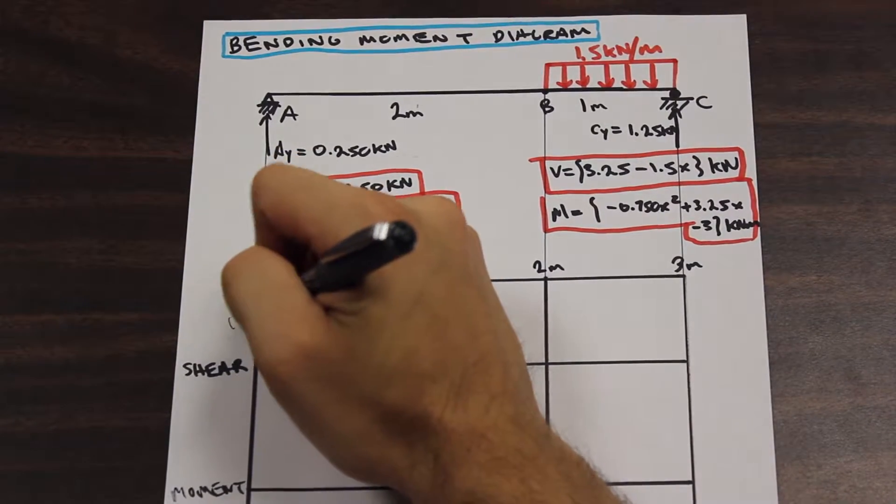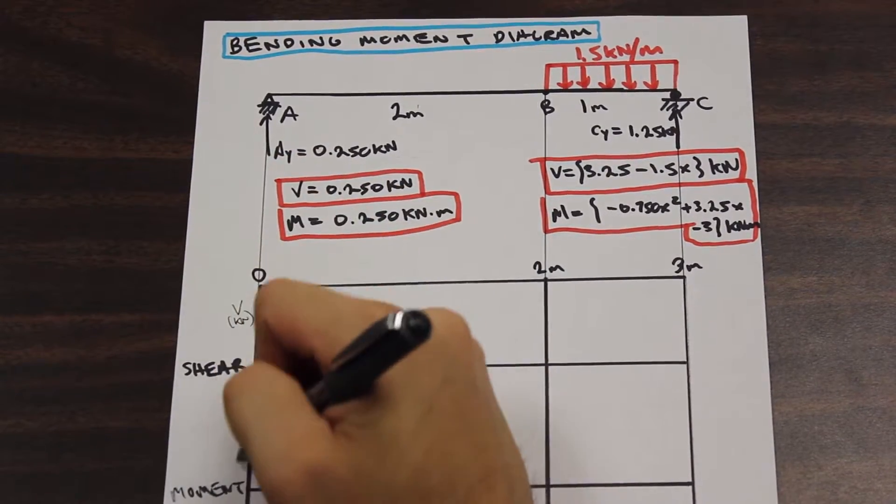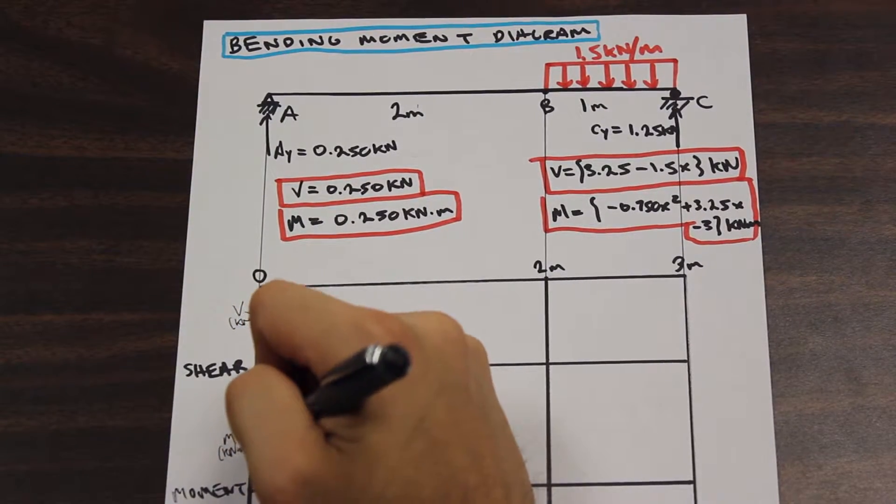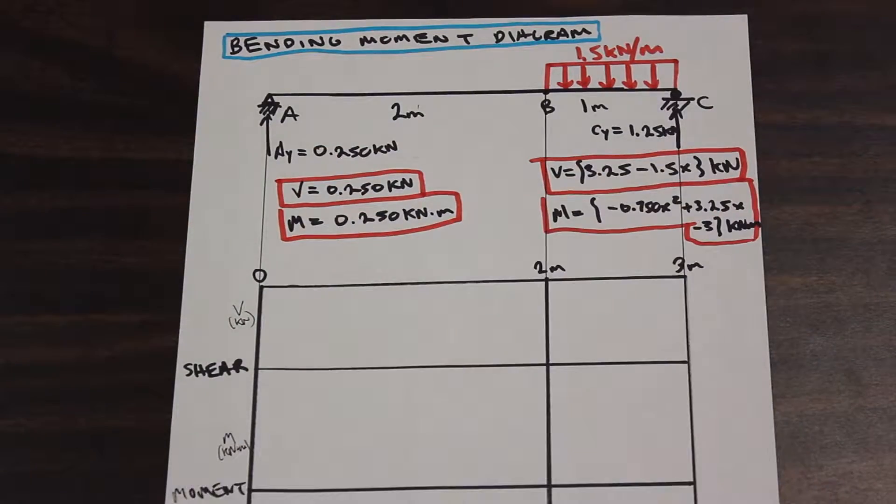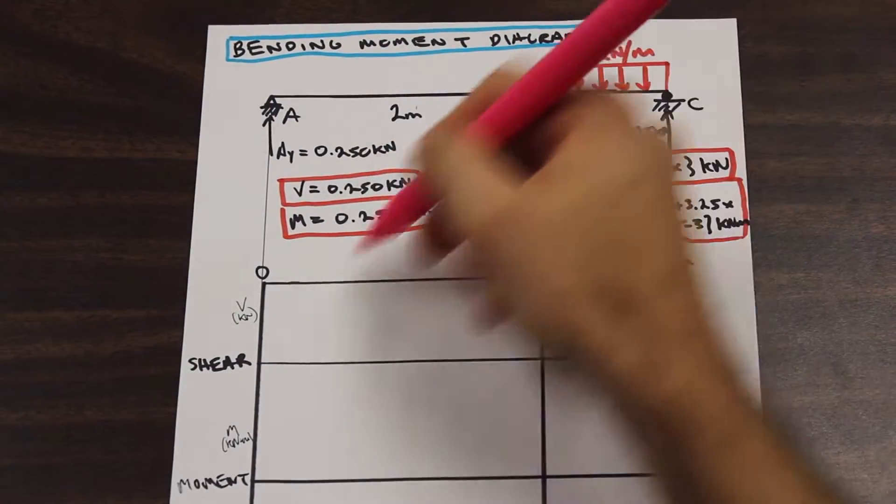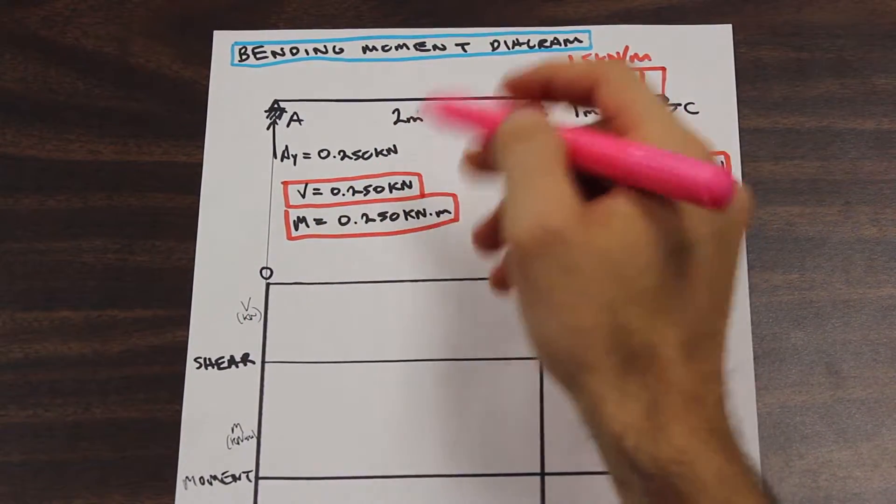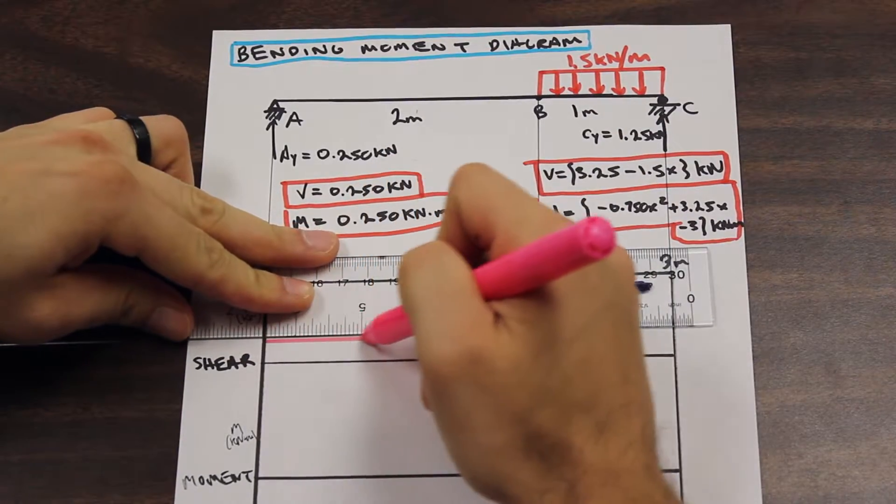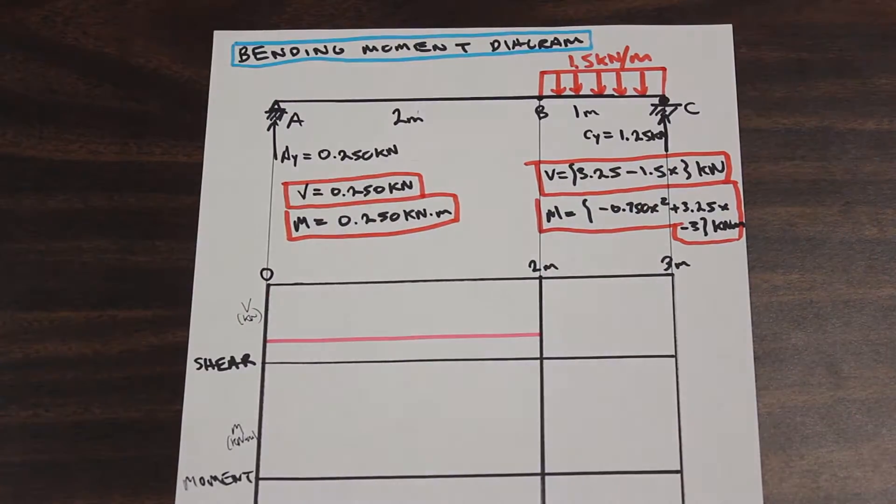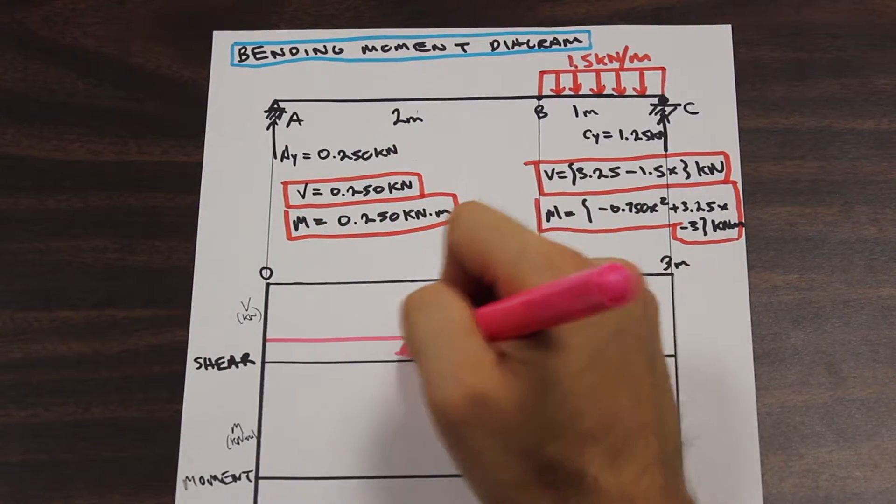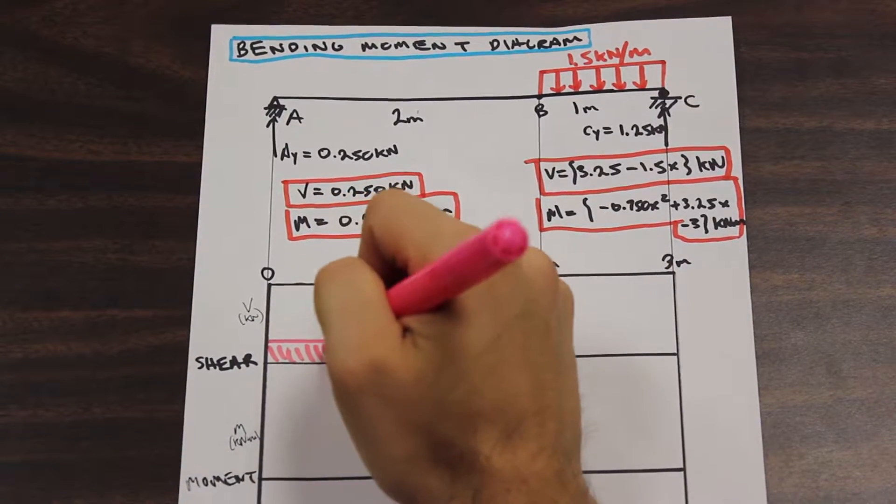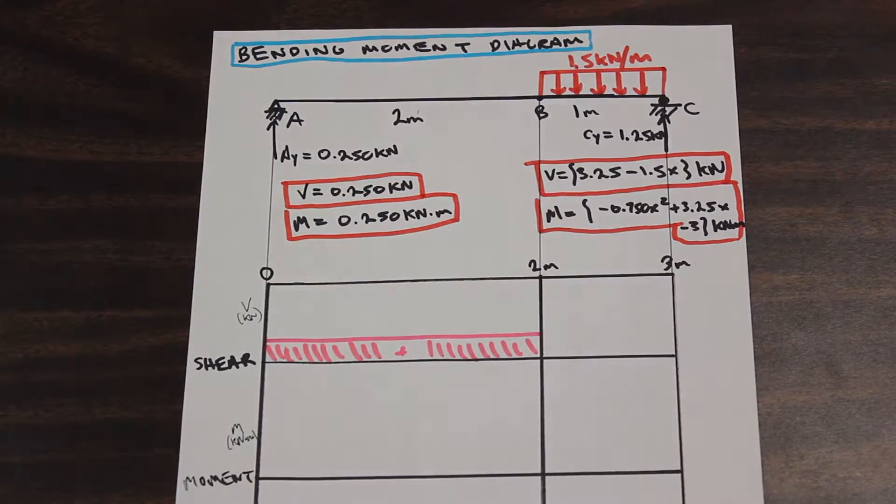So let me indicate that for you here. This is going to be V in kilonewton for the y-axis here, and this is going to be M in kilonewton meters. And this is distance. So as we move down the beam, the shear for this section is going to be the same. So we just go ahead and draw a line across like that. And we'll give that some nice lines there, and that is going to be our first section for shear.